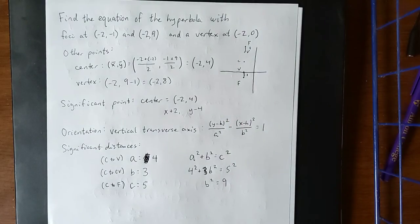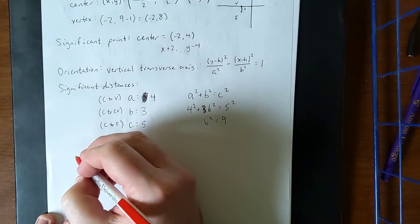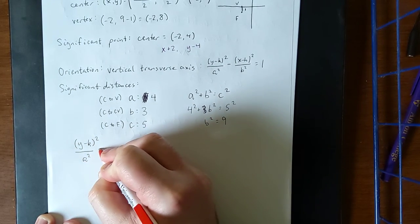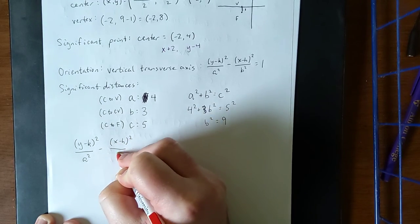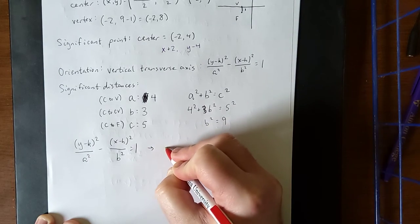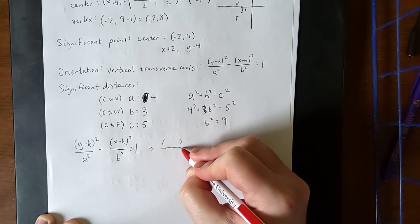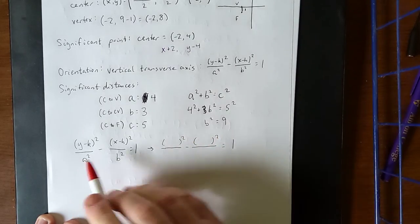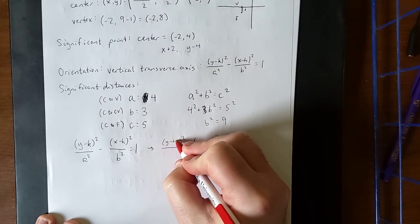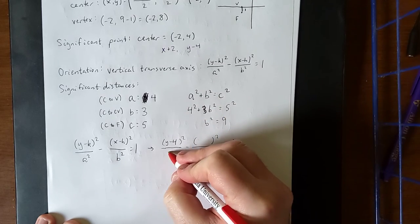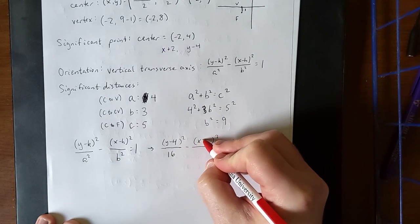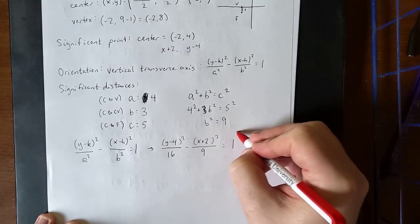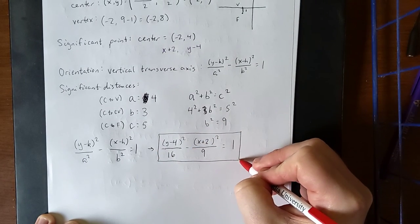Now that we have all of these pieces of information, we should be able to answer the big important question, which is going to be what is the equation? I mentioned earlier vertical transverse axis. It means that this will take on the following form, and then we'll actually plug in all of the things that we now know. So plugging in all of the things that we know, (y - k), that's going to be (y - 4), over a², which is 16, minus (x + 2), all over b², which is 9, will be equal to 1. So here's our final answer for our hyperbola.